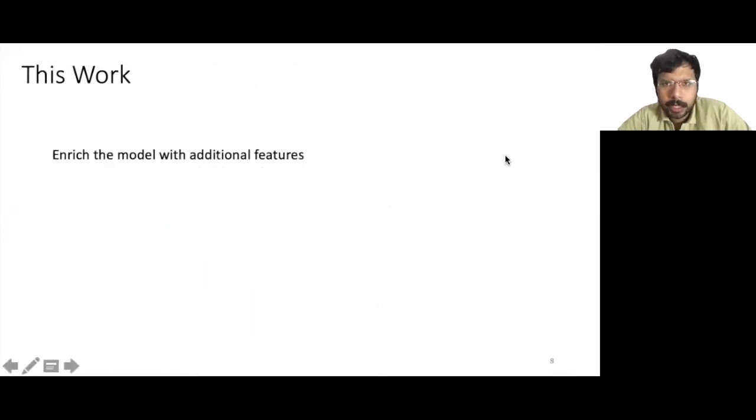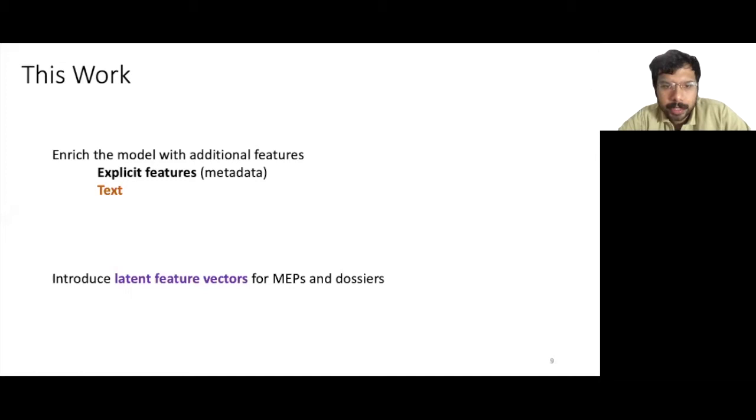In this work, we enrich this model with additional features. In particular, we add explicit features, which are the metadata of an edit that we discussed previously, and the actual text of the amendments. We also introduce latent feature vectors for the MEPs and the dossiers.